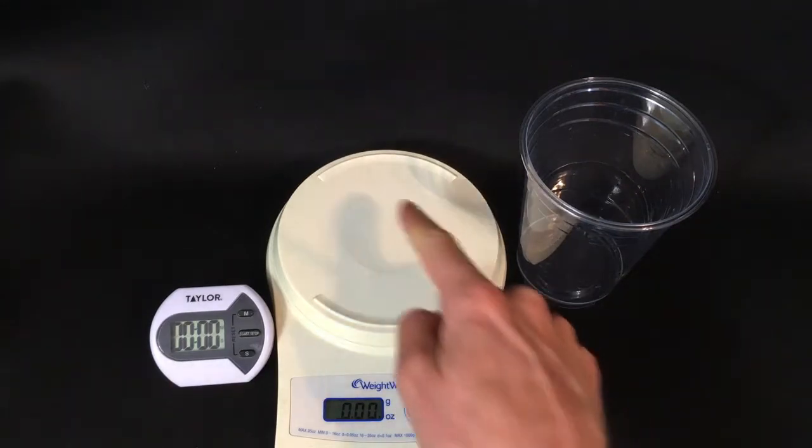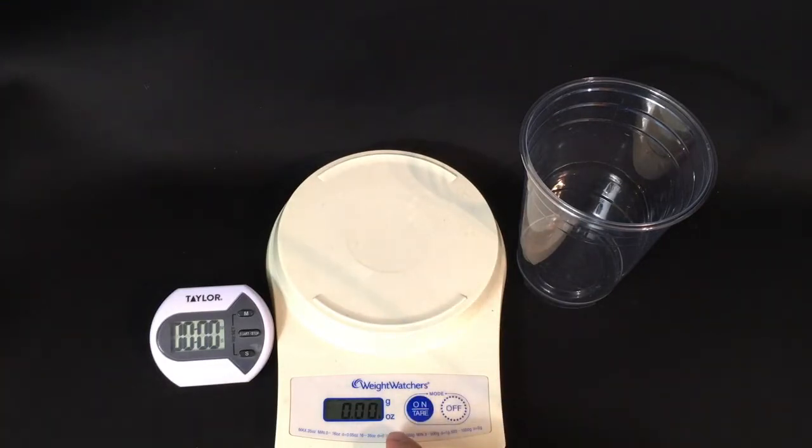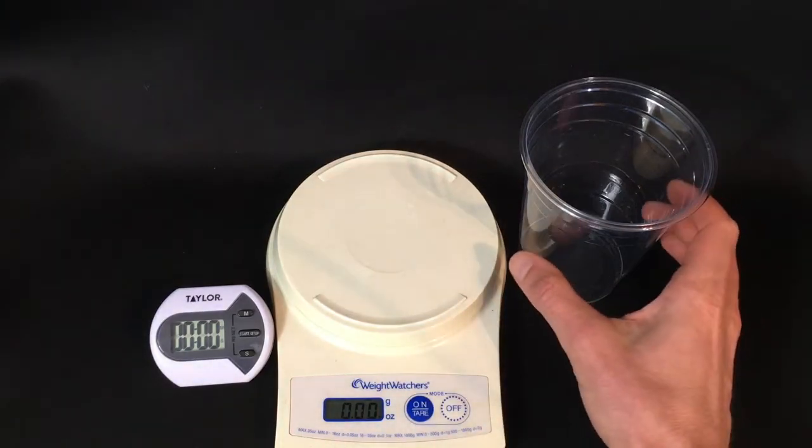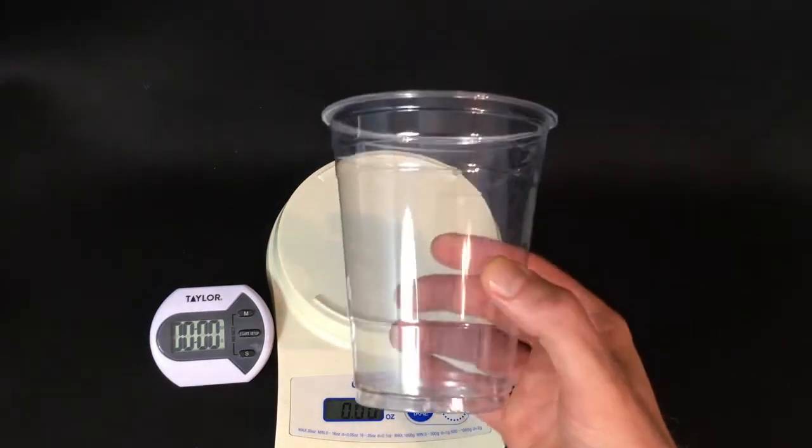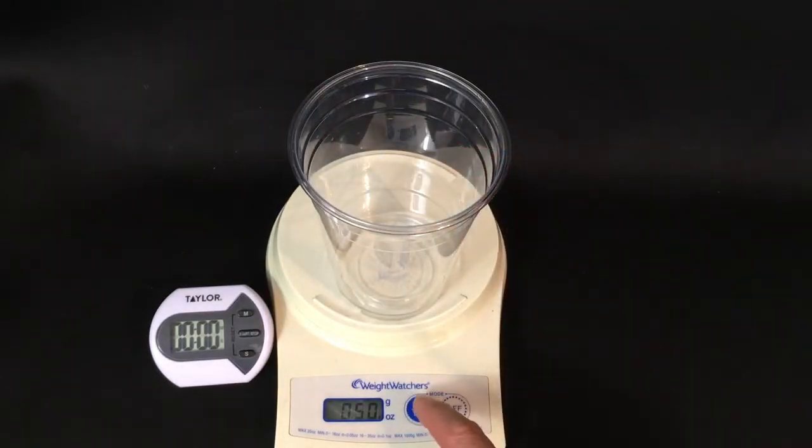Here we have a scale. We've turned the scale on and we'll measure in ounces with two decimal places after the period. We will take a cup, start with the regular cup and put it on the scale. Then we will need to tare the scale, setting it to zero.